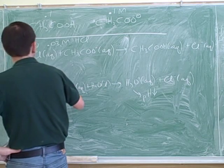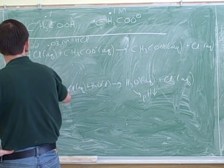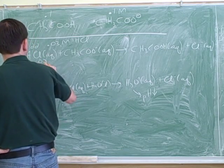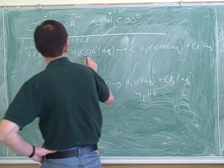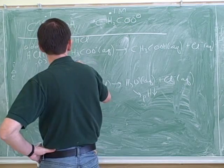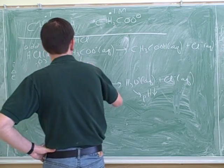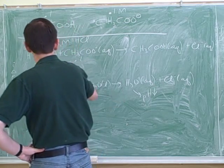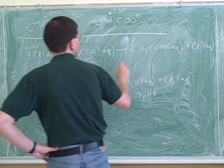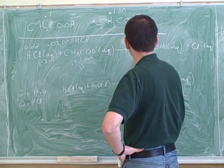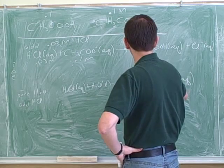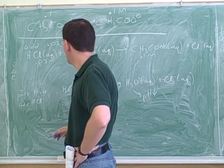So in our table, we started with 0.03 molar HCl, 0.1 molar acetate, and 0.1 molar acetic acid in the initial row.